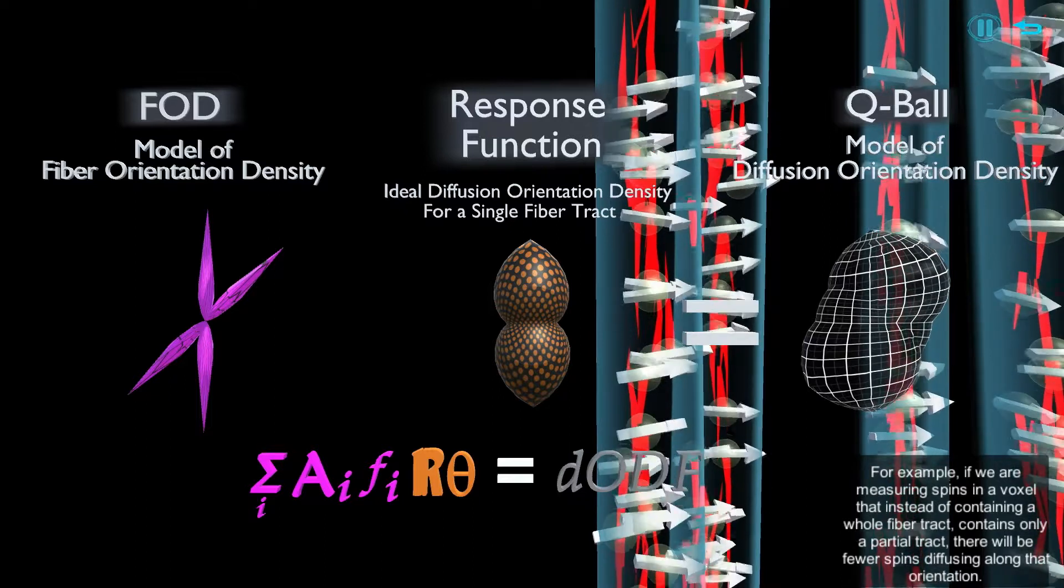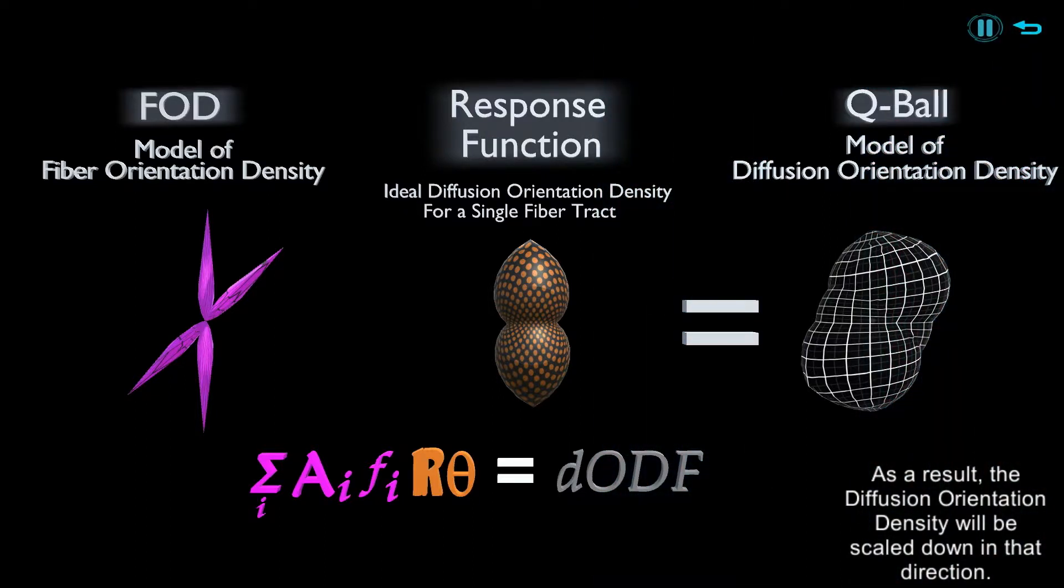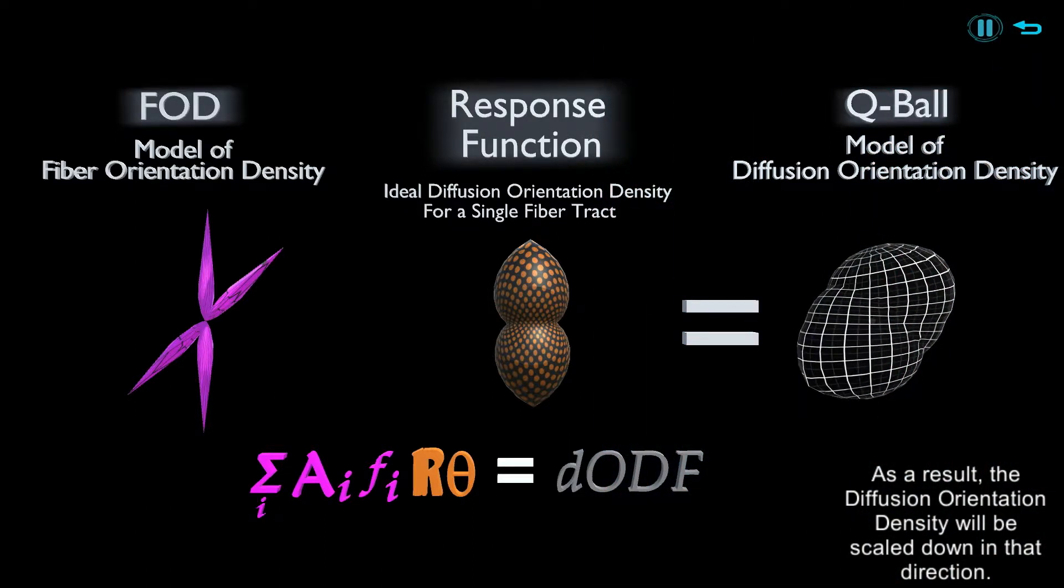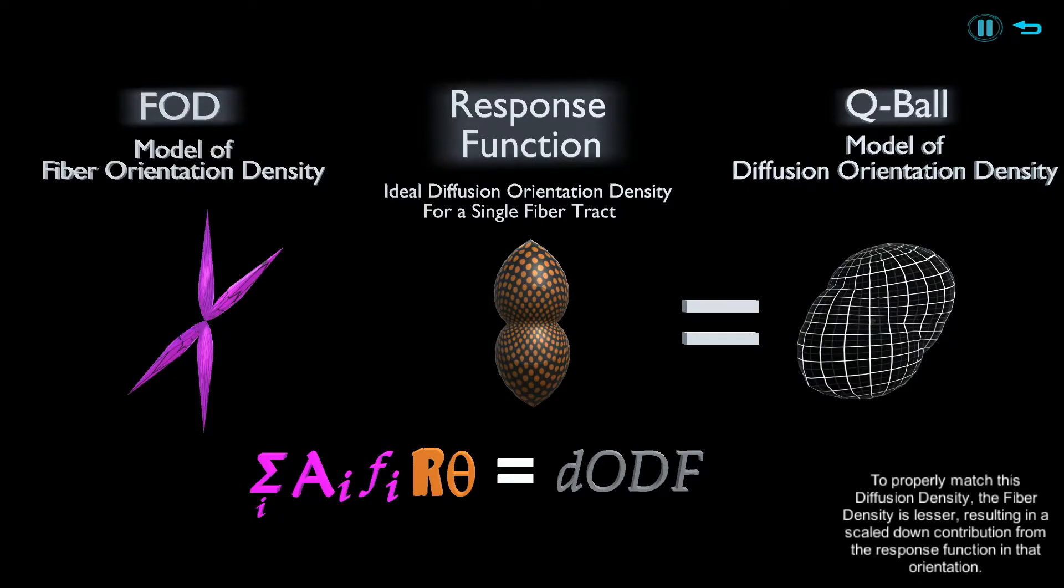As a result, the diffusion orientation density will be scaled down in that direction. To properly match this diffusion density, the fiber density is lesser, resulting in a scaled-down contribution from the response function in that orientation. Overall,